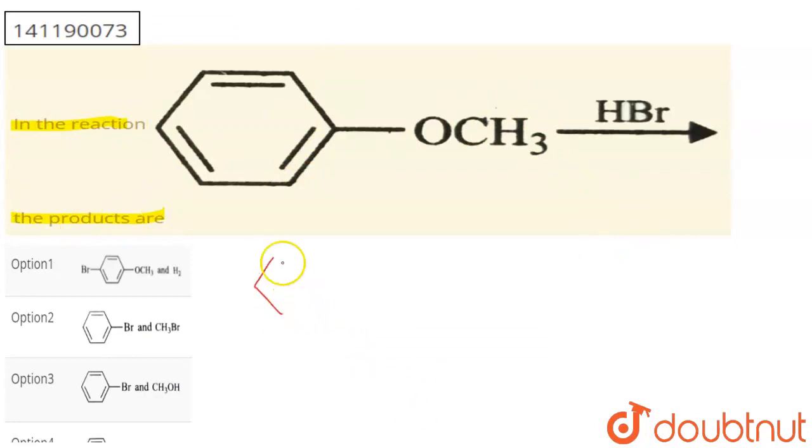So basically, what is the system? An anisole system. Oxygen has lone pairs. Here is HBr.